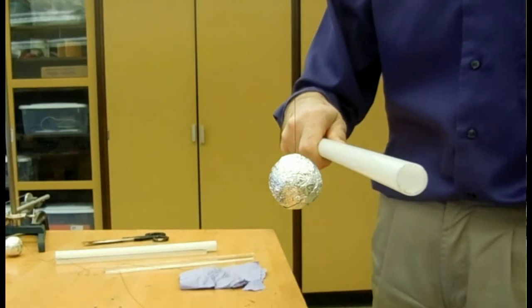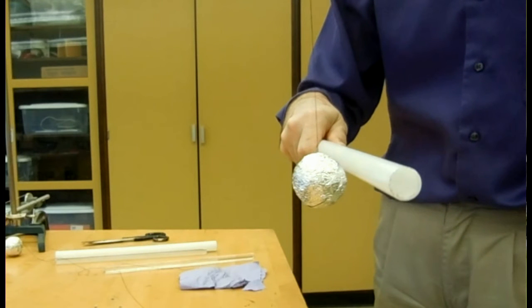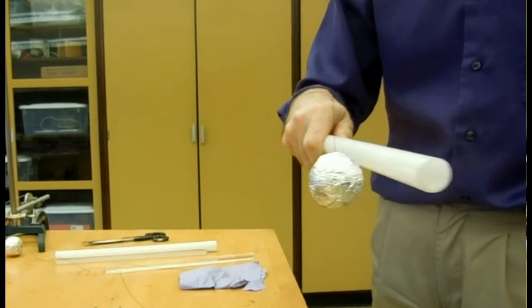At first, the ball is attracted to the rod. That's easy to explain now. We know that the ball is being polarized by the rod, and that results in an attractive interaction, as we've seen. Then, I touch the rod to the ball. Now the ball is repelled from the rod. That's also easy to explain. They have like charge, and so they repel each other.